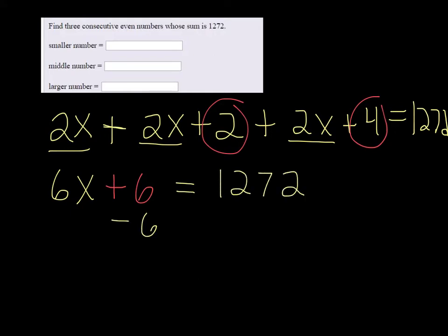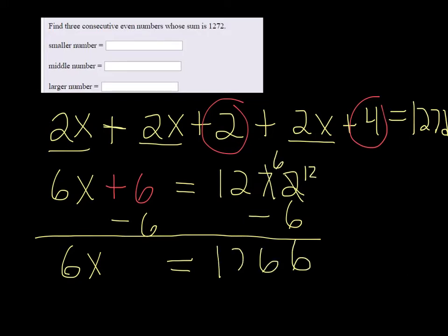We want to subtract the 6 on both sides and we get 6x equals, let's see that's 12 minus 6 is 6, we borrowed another 6, 1266.